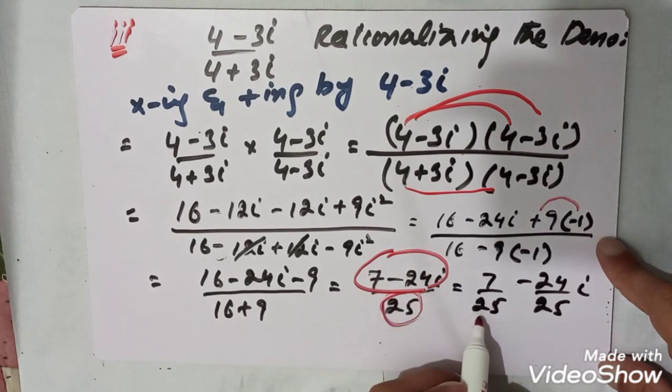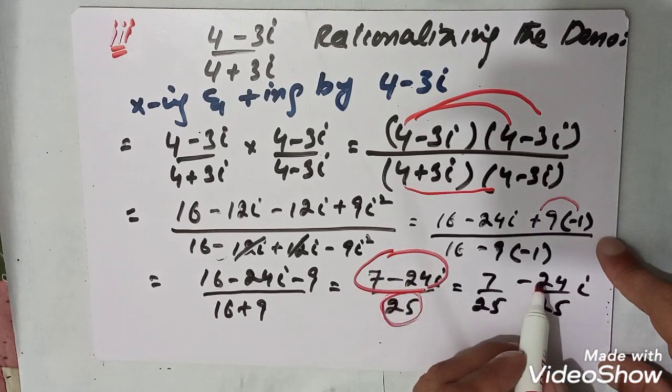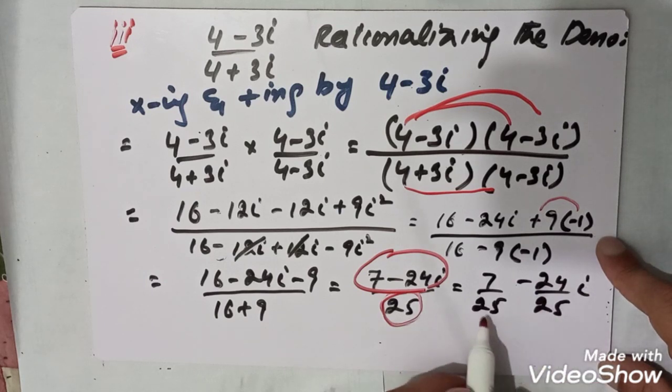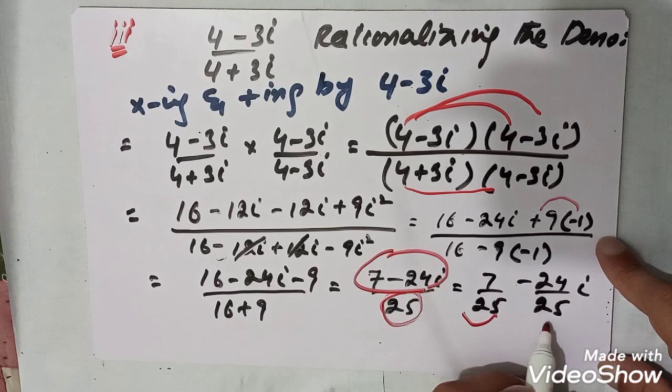The final answer is 7 divided by 25 minus 24 divided by 25 iota. Here 7/25 is the real part and minus 24/25 is the imaginary part.